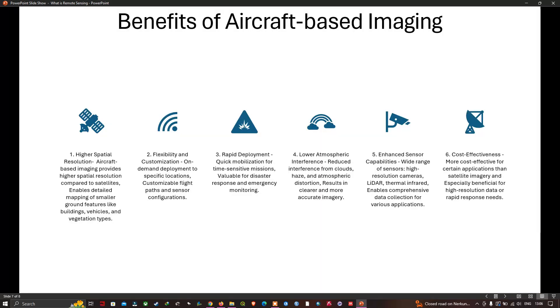The benefits of aircraft-based imaging include high spatial resolution - aircraft provide higher spatial resolution compared to satellite images. Flexibility and customization - on-demand deployment to specific locations with customizable flight paths and sensor configurations. Rapid deployment and quick mobilization. Lower atmospheric interference. Enhanced sensor capabilities. And it is more cost effective for certain applications than satellite imagery.